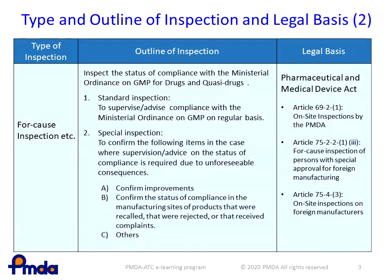Special inspections under the for-cause inspections are conducted in cases where supervision — advice on the status of legal compliance — is required due to unforeseeable consequences such as recalls, rejections, or complaints. Special inspections are conducted without prior announcement in principle and are referred to as unannounced inspections. For-cause inspections are also conducted to confirm the status of compliance with the GCTP.